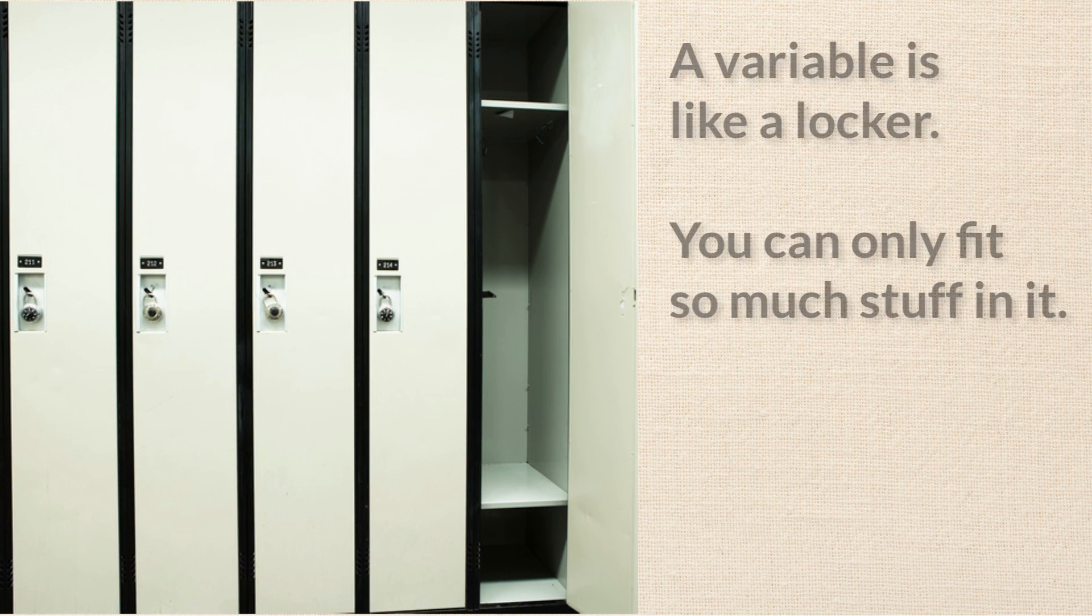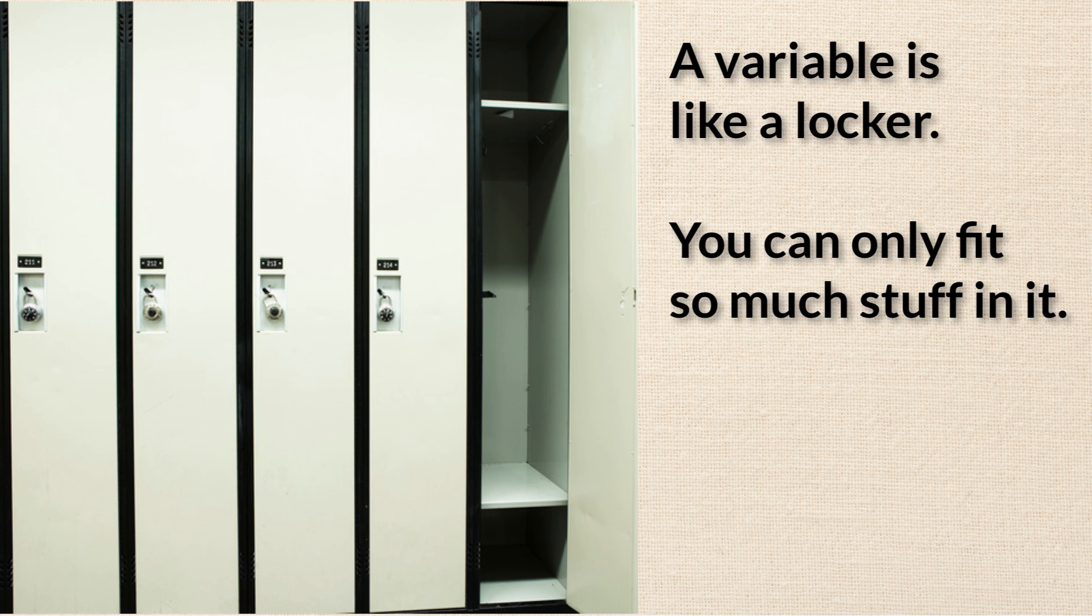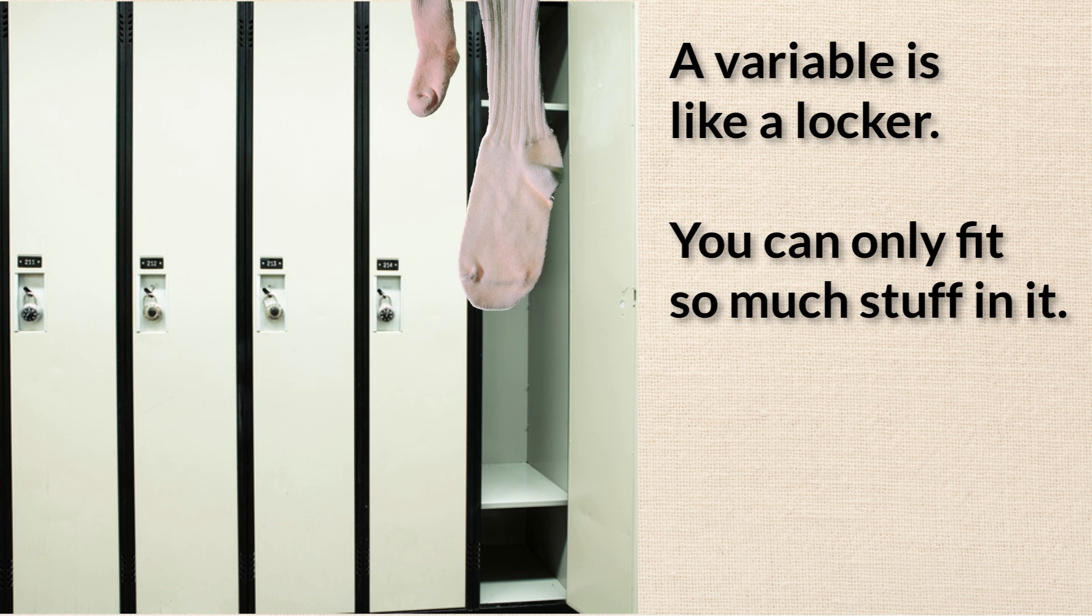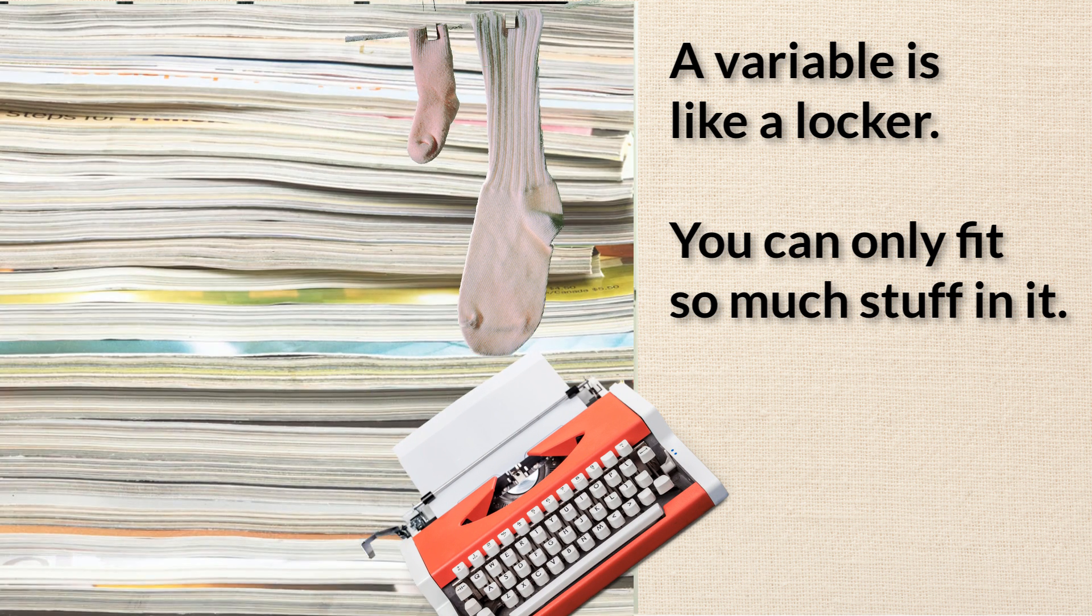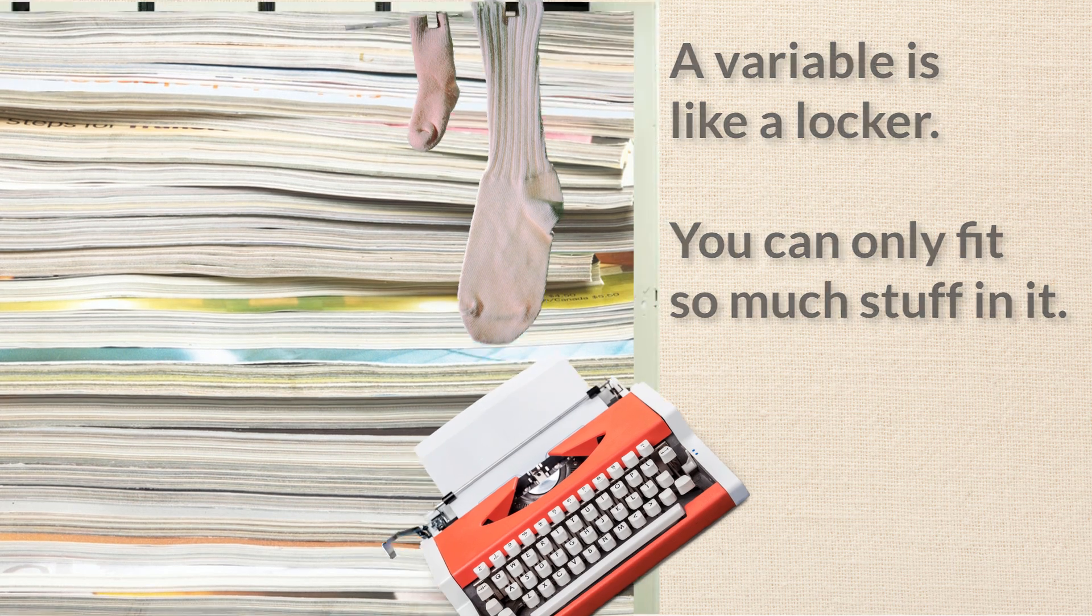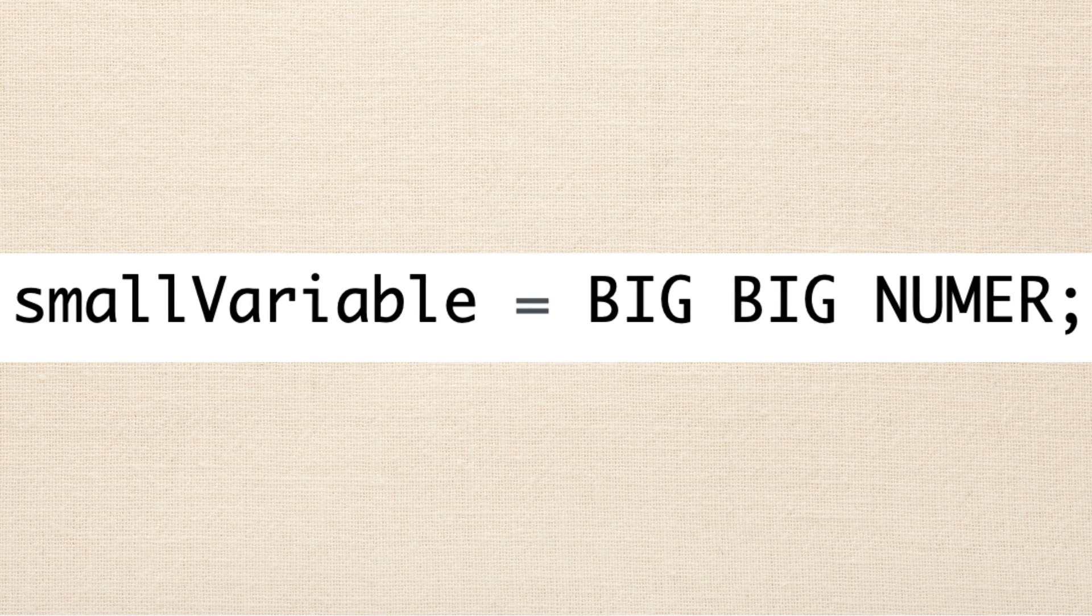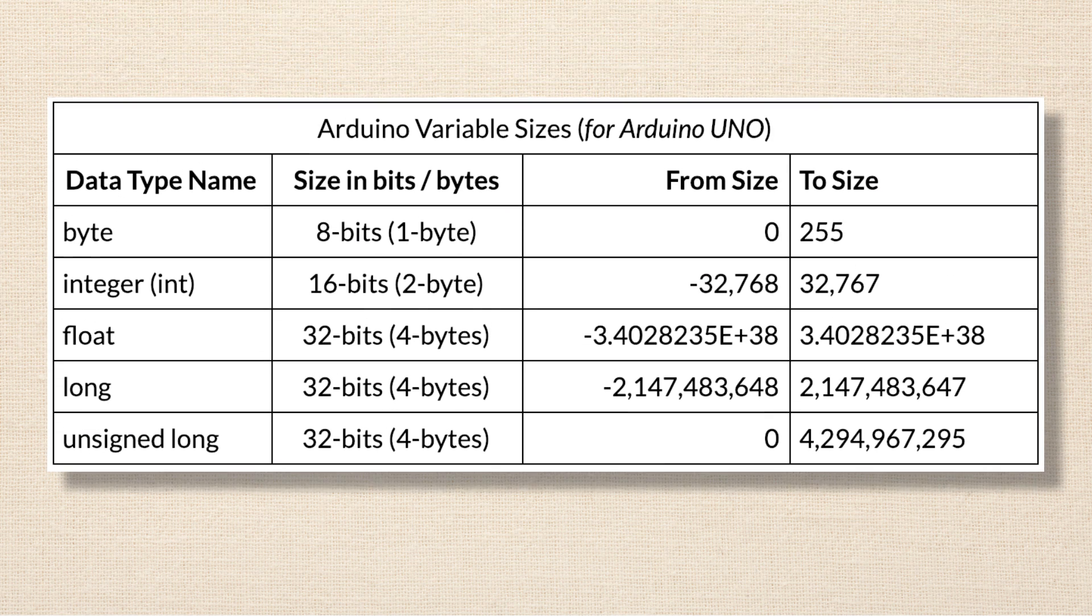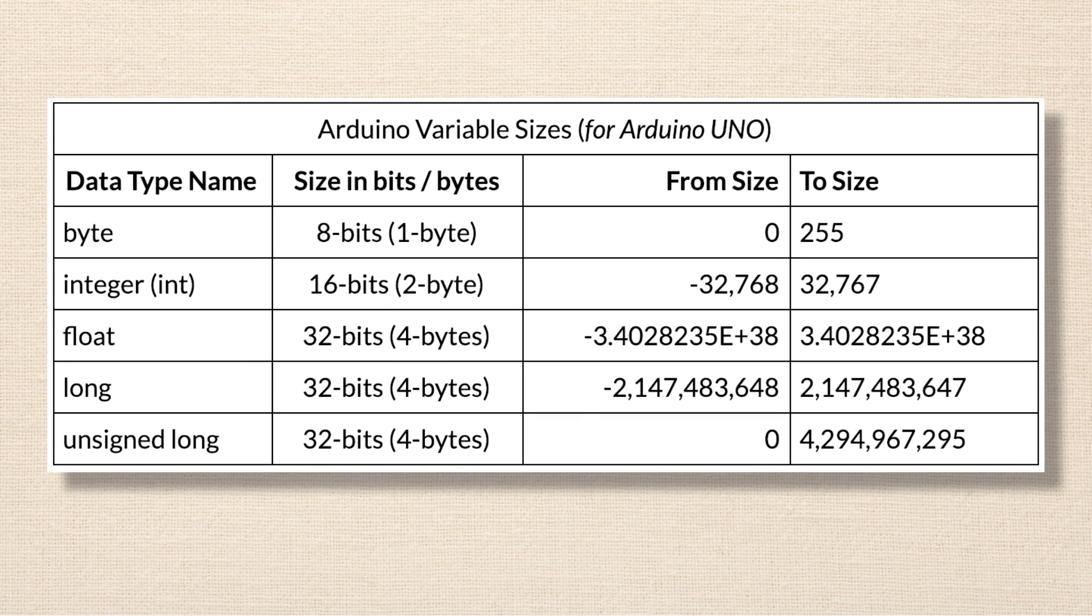As a quick refresher, a variable is like a storage locker. It can only fit so much stuff. If you're trying to stick dirty socks and an old typewriter and 74 years worth of Vogue magazine into a tiny little gym locker, it's just not going to fit. The same goes with variables. If you use a variable that's too small and try to store a really big number in it, some funky stuff is going to happen. The data type of a variable is what specifies the kind of data and the size of the data that a variable will be storing.